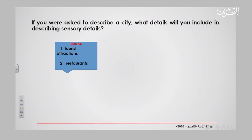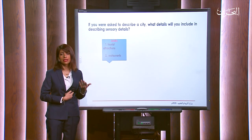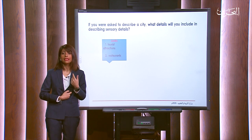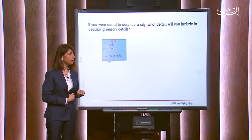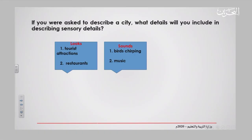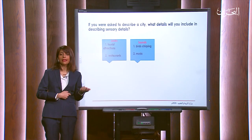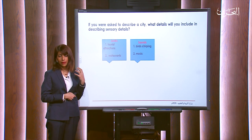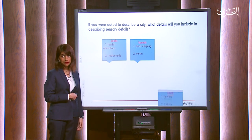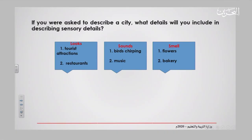Here are some suggested answers for sensory details about a city or any place. For look: tourist attractions and restaurants — you can see tourist attractions and restaurants; you could add extra examples like 'I can see the hotel' or 'I can see the sparkling water.' For sounds: birds chirping and music — you can hear birds, music, or people singing. Anything related to hearing is classified as sound.